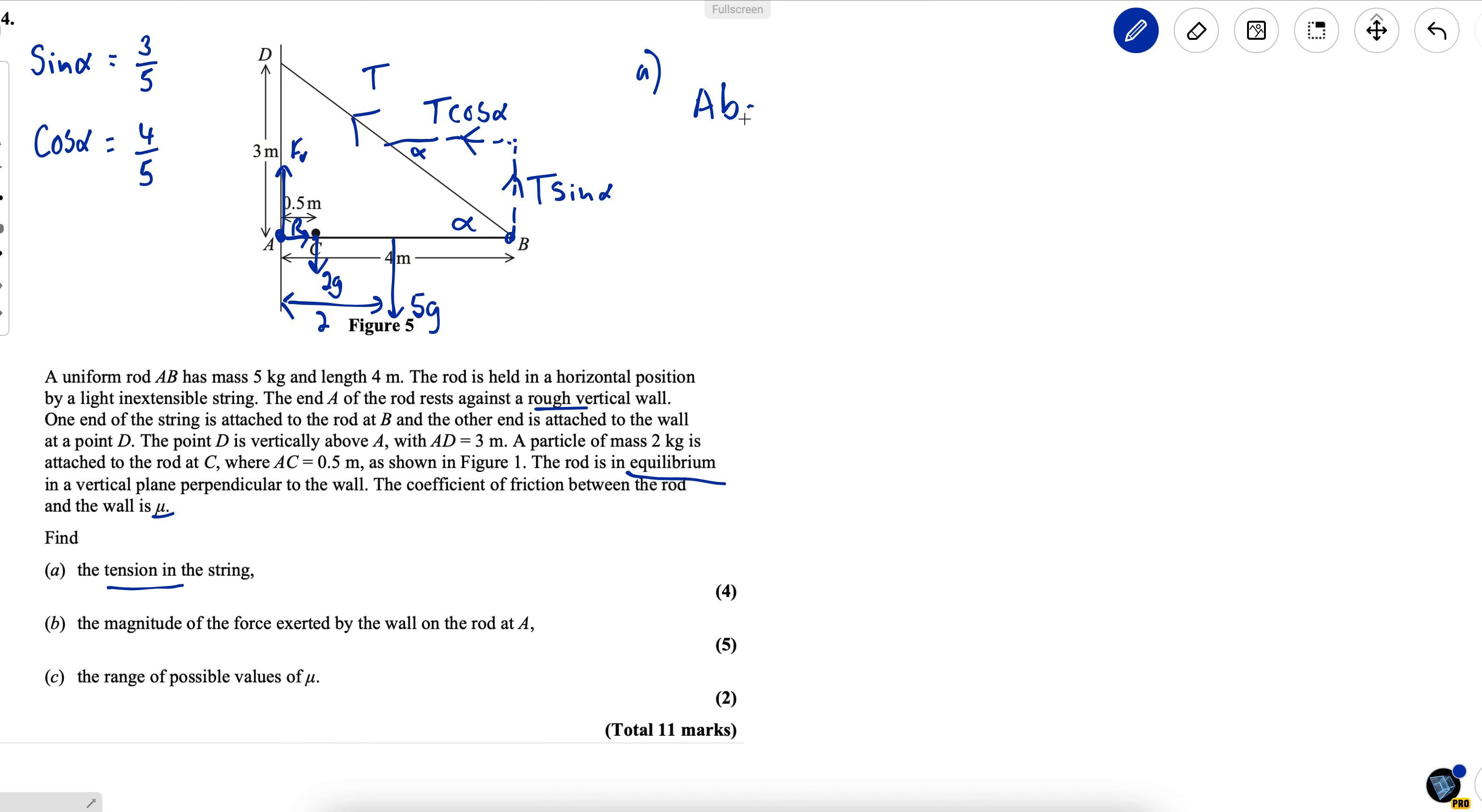So this is part A about A. There are two clockwise moments and there's one anticlockwise moment so I'll do the anticlockwise one first plus four multiplied by T sine alpha equals as it's in equilibrium zero point five times two G plus two times five G.